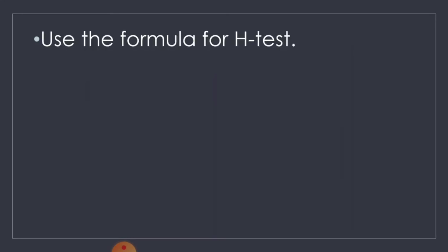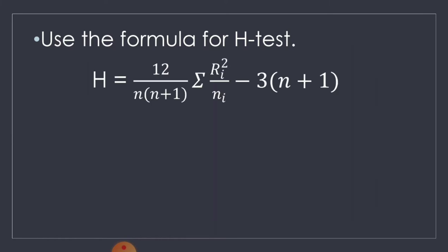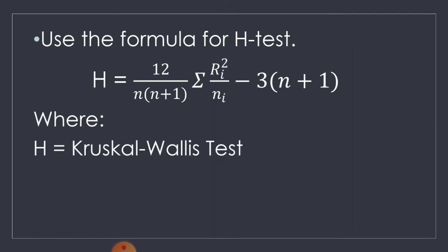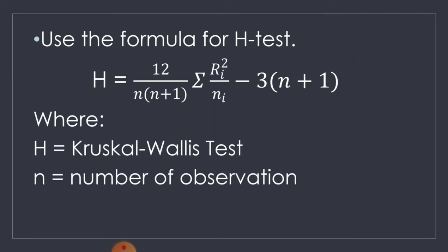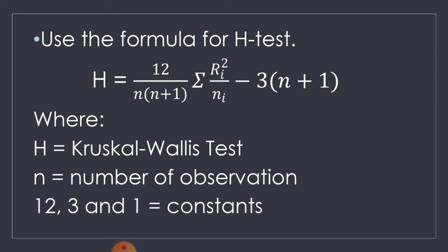We also need to use the formula for the H-Test. That is: H is equal to 12, all over n times the quantity n plus 1, times the summation of R sub i squared all over n sub i, minus 3 times the quantity n plus 1. Where H is the Kruskal-Wallis statistic, n is the number of observations, and 12, 3, and 1 are constants.